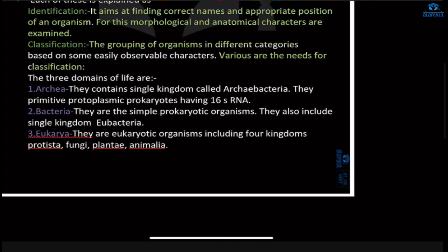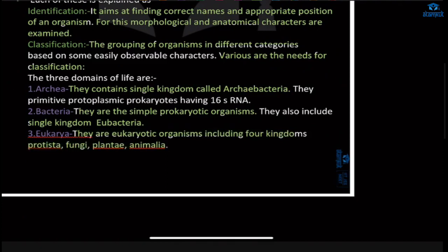There are three domains of life. First, Archaea, which contains a single kingdom called Archaebacteria. Then Bacteria, which contains prokaryotic organisms — a single kingdom that includes Eubacteria. Then Eukarya, which contains eukaryotic organisms: Protista, Fungi, Plantae, and Animalia are included under Eukarya. Whatever organisms or species are found, they will be classified under these three domains according to their morphological and anatomical characteristics.